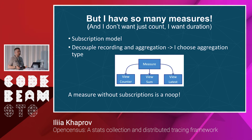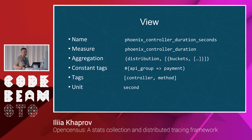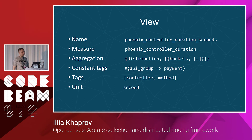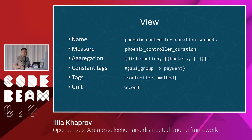We also have a parse transform: if you record with a constant measure name — an atom string — it generates a module name which backs the measure, so you're not touching ETS for dispatching. It just unrolls the subscription loop. This is view anatomy: a view has a name, references a measure, an aggregation type, constant tags, and just tags. When you record a measure, as an instrumentation author you give a list of tags, and your users who define views can overwrite this — they can select only the tags they care about.